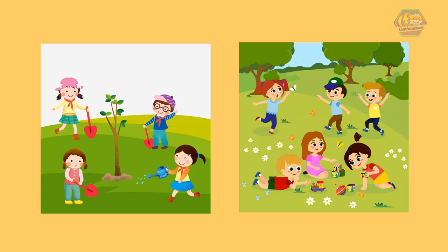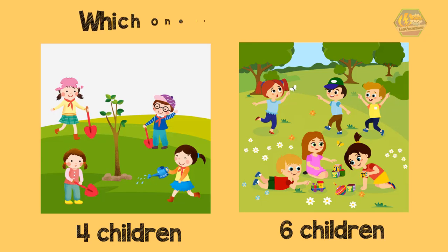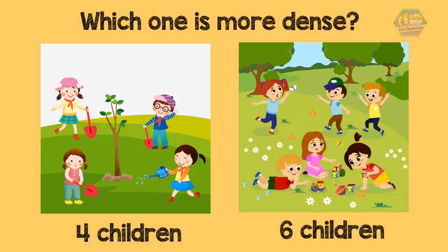Take a look at these pictures. The picture on the left side has 4 children, while the picture on the right side has 6 children. Which one is more dense? Correct, the one on the right side is more dense.